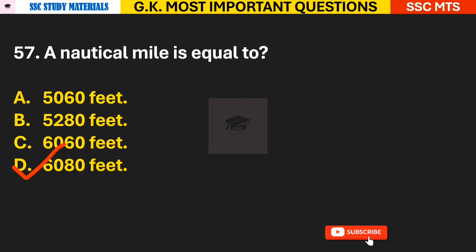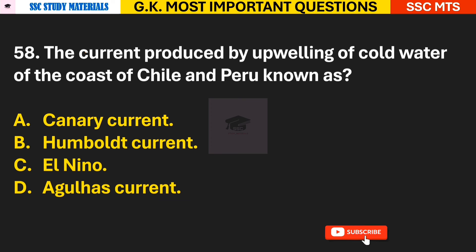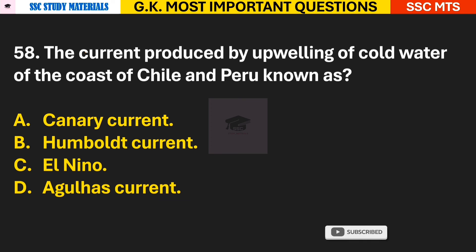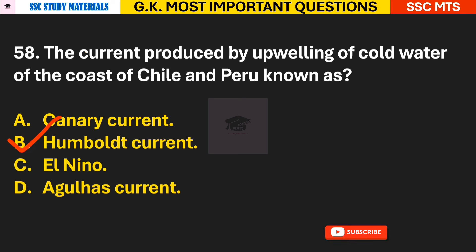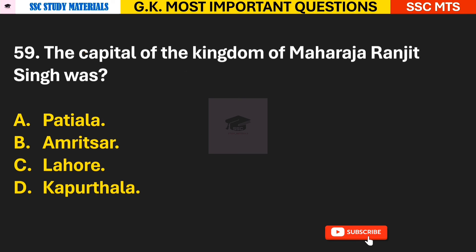Question 57: A nautical mile is equal to how many feet? Answer D — 6,080 feet. Question 58: The current produced by the upwelling of cold water off the coast of Chile and Peru is known as what? Answer B — the Humboldt Current.